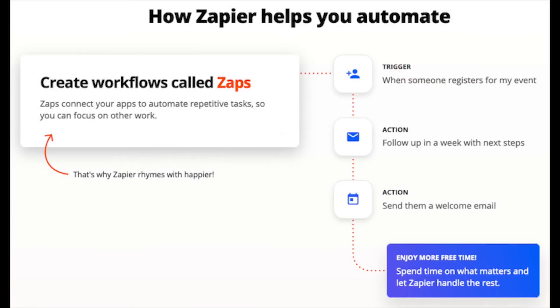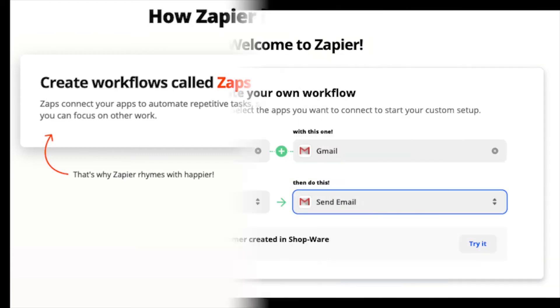Application functions connected into a workflow are called Zaps. You set up the triggers, searches, and actions, and Zapier does the rest.